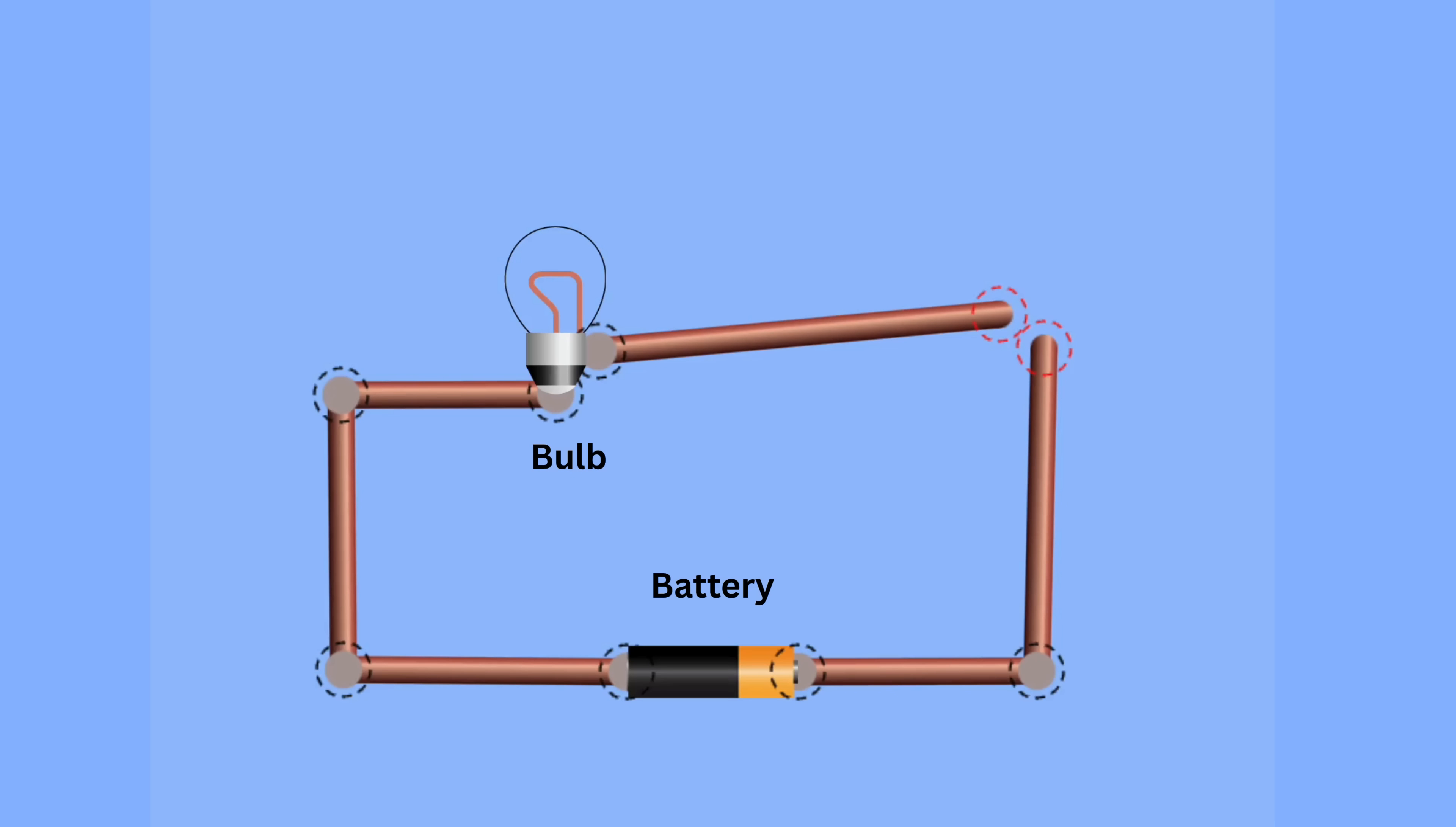Suppose we connect a battery to a bulb using wires. The battery creates a potential difference between its two terminals. The negative terminal has an excess of electrons, while the positive terminal has a shortage.